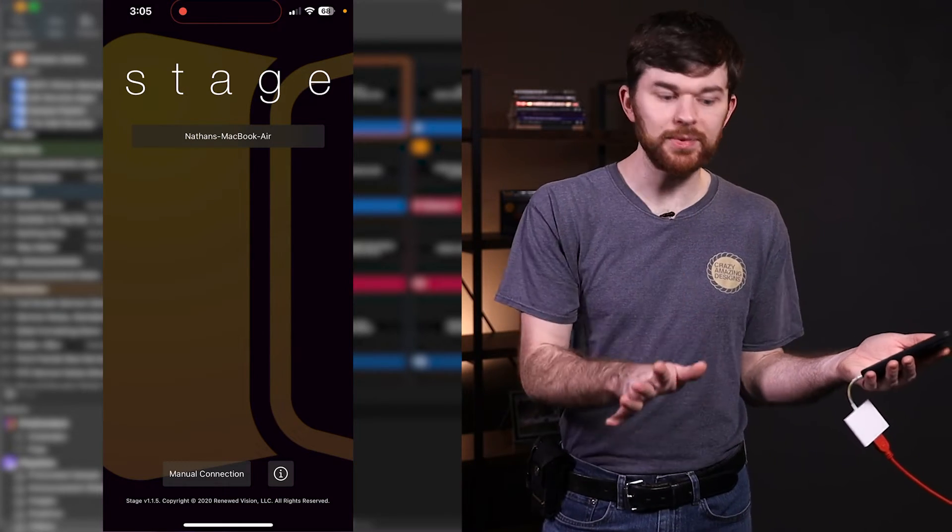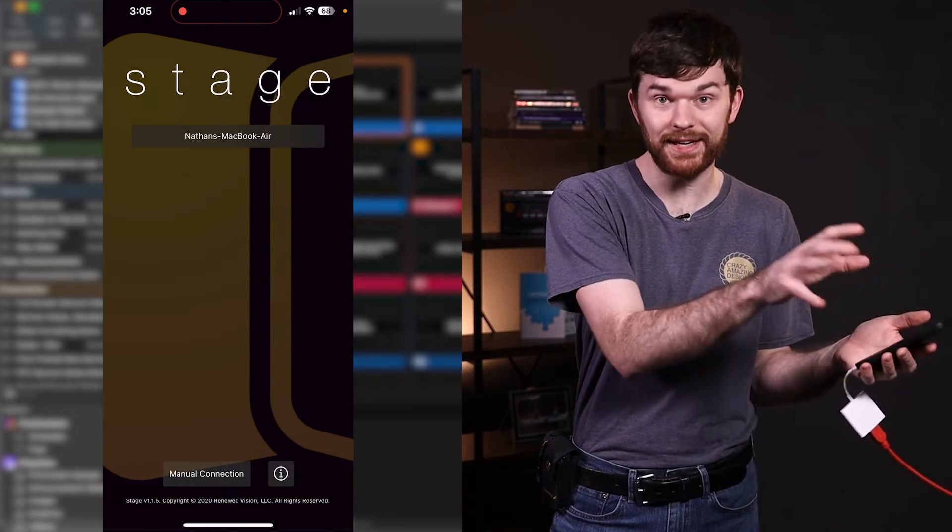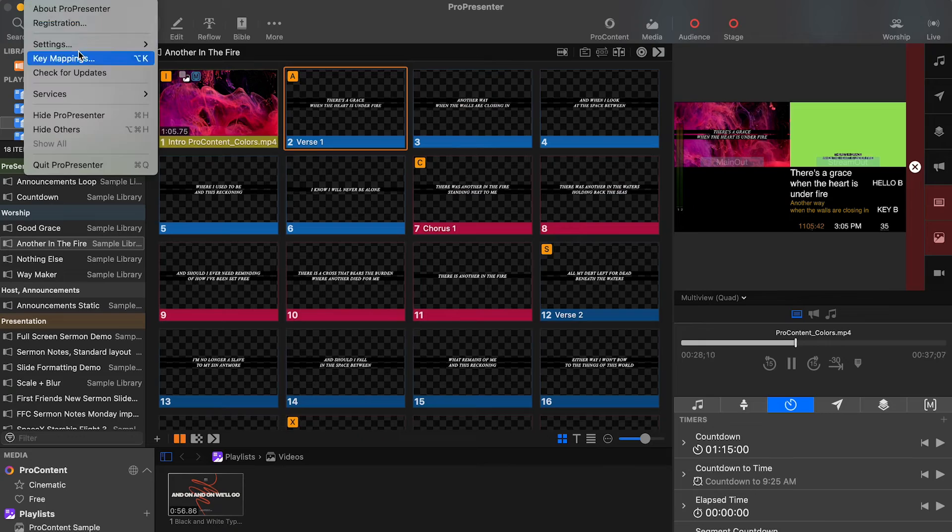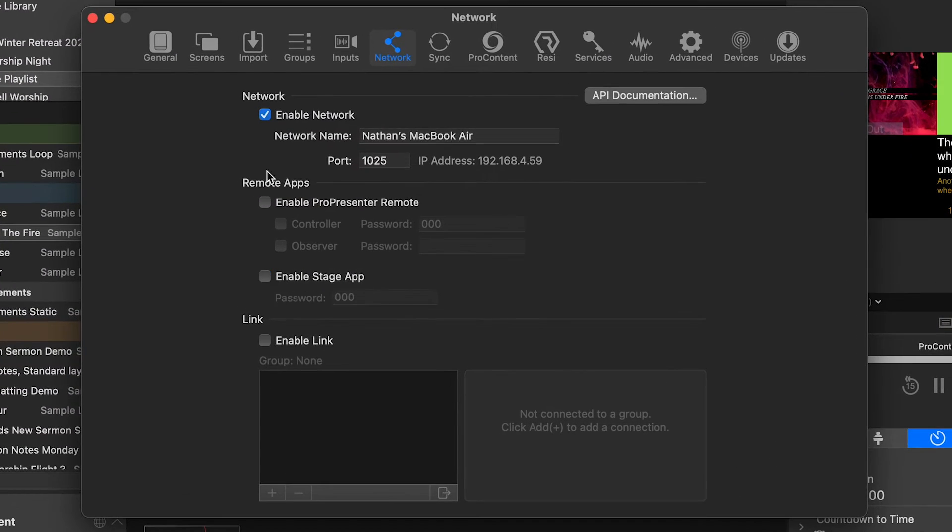So just to be clear here, ProPresenter runs on a computer, Mac or PC, and then the app connects to that computer. So if you go up to ProPresenter settings in the top left, go down to network, we can now make sure a couple of things are enabled. Okay, so when you go to the network tab, you're going to want to make sure your network is enabled. And now you're going to want to make sure that your stage app is also enabled and you're going to want to set a password. Let's just do three zeros.